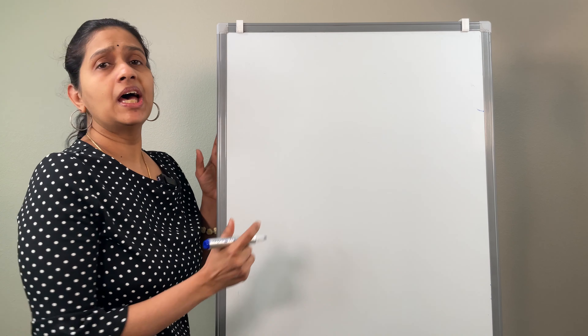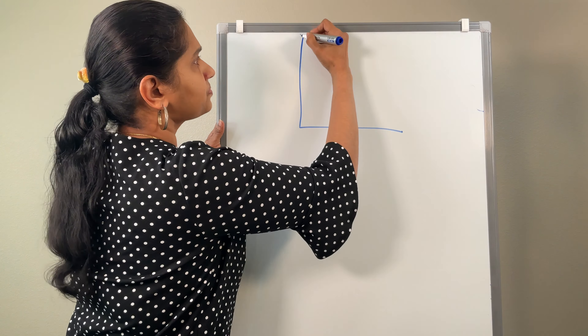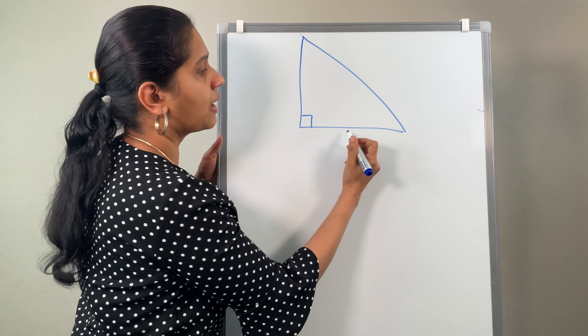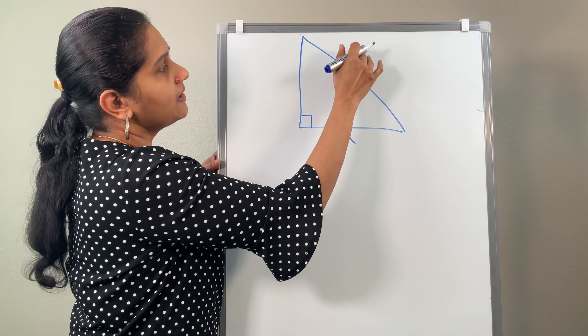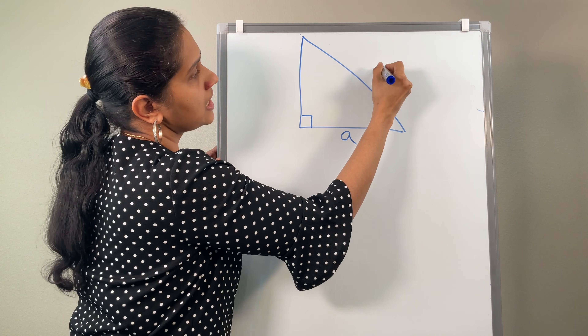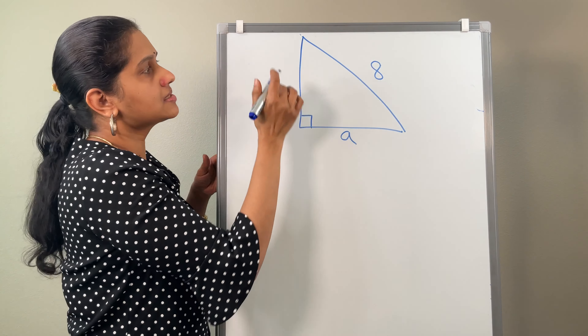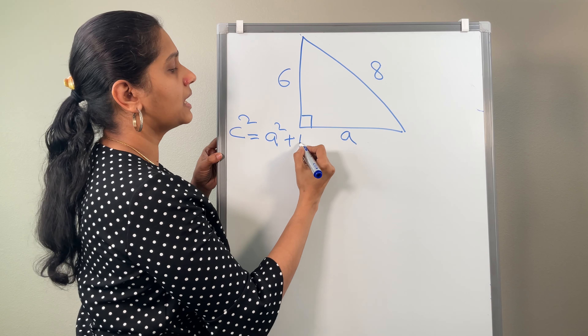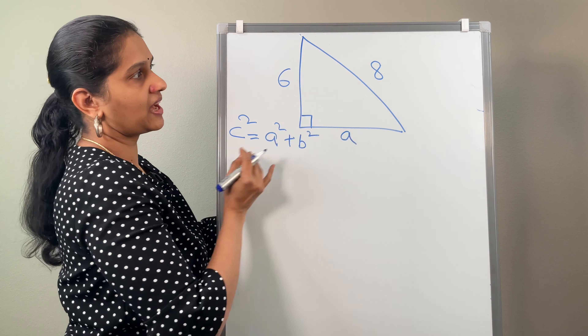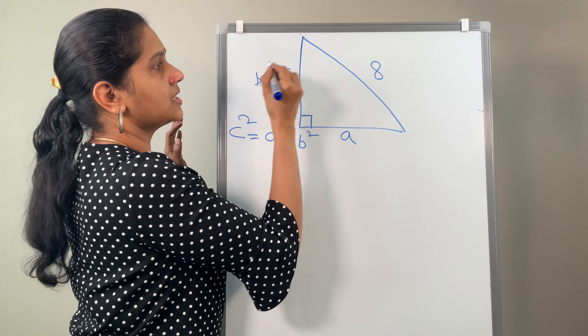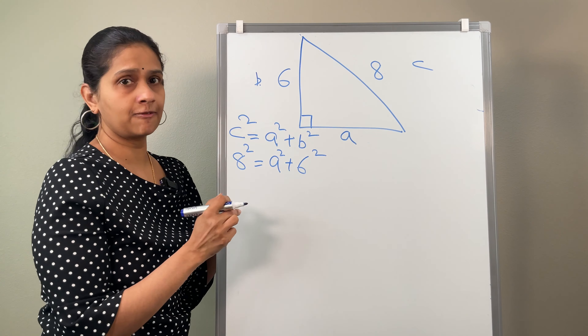Now consider the case where you are given the hypotenuse measure and the measure of one side, and you are asked to find the other side. For example, we are not given the value of A, and we are given the hypotenuse as 8 and this side as 6. Now you are asked to find the other side. According to the Pythagorean formula, C squared equals A squared plus B squared. This side is A, this side is B, and the hypotenuse is C.